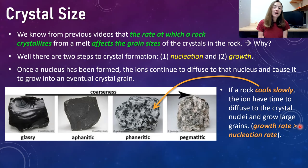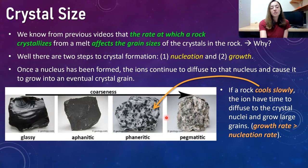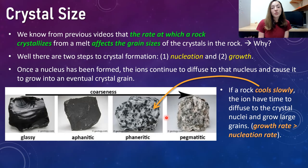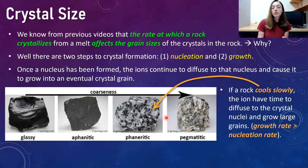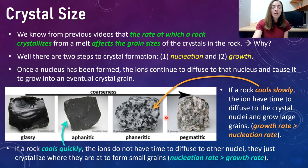This coarse-grained texture is called phaneritic in igneous petrology. So if you have a phaneritic rock, it's relatively coarse-grained throughout the entire rock. These rocks are typically like granites, which are plutonic, siliceous rocks that cooled slowly, or gabbro, which are mafic but also cooled slowly and allowed time for crystal grains to become large.